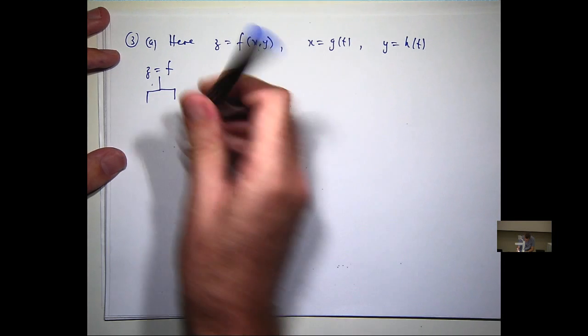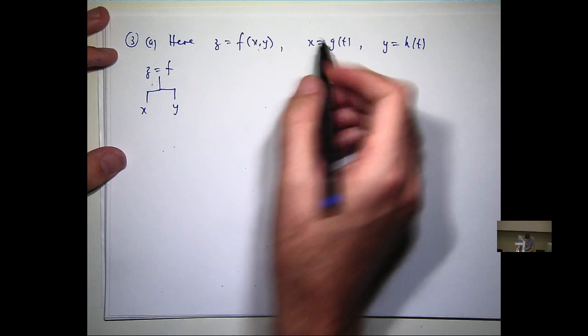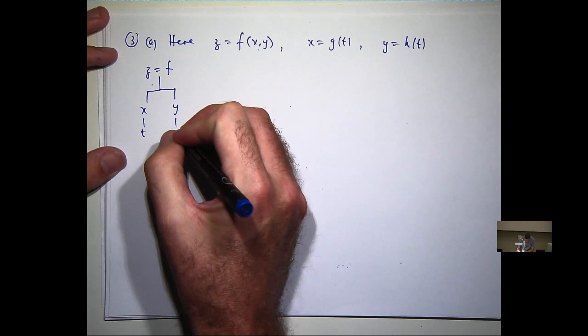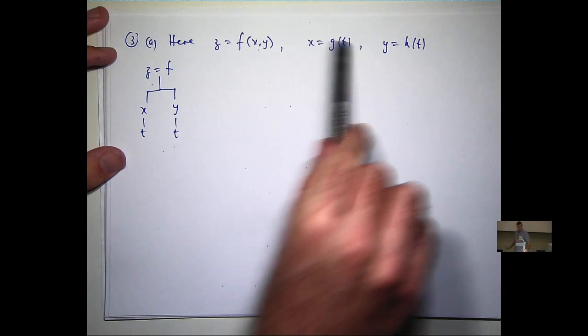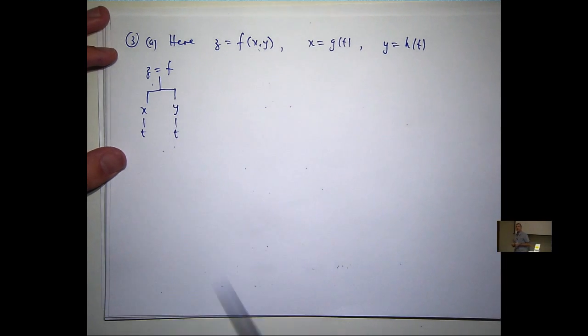f depends on two things, so you draw a little sort of split. x depends on one thing, t, y depends on one thing, t, so you've got these links.